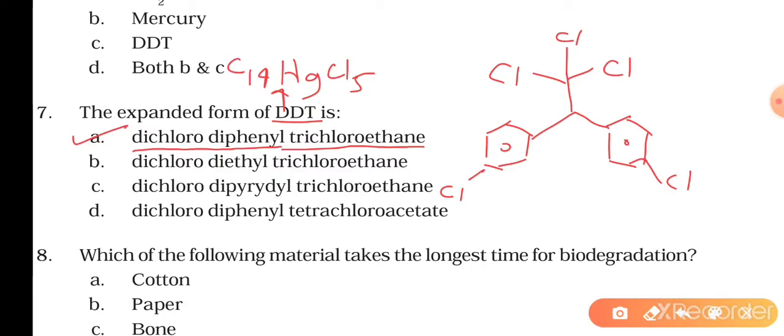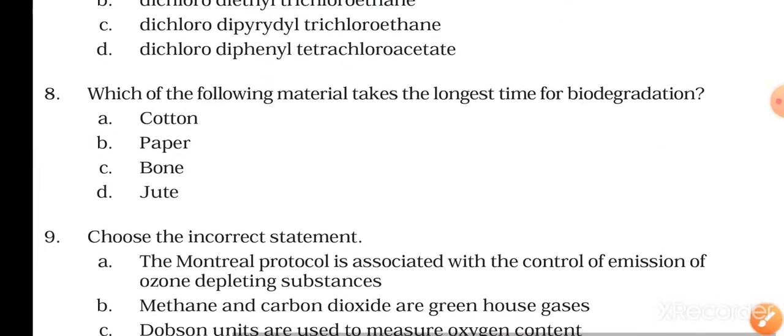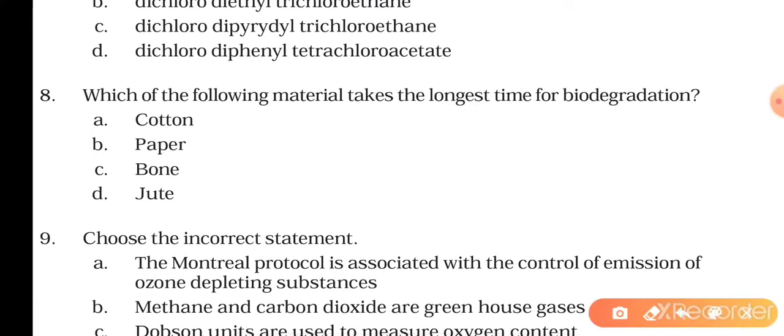Now the next question, question number eight: which of the following material takes the longest time for biodegradation - cotton, paper, bone, or jute? The right answer will be bone. As you guys know, bone contains collagen fibers and collagen fiber is very much resistant to degradation. It takes a lot of time for degradation, and calcium also gives strength to bone. That's why the right answer will be C.